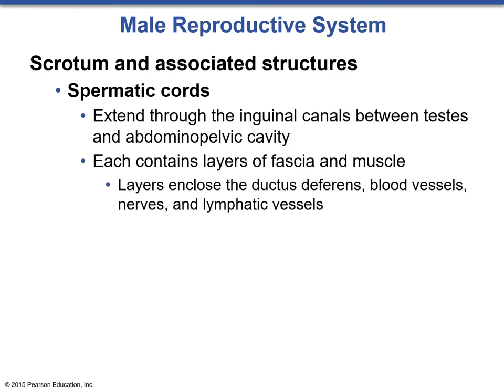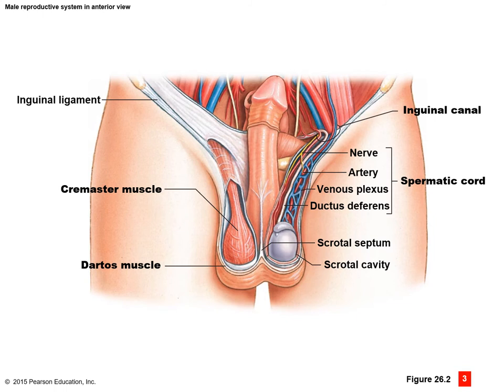Remember the spermatic cords — those are the actual structures that extend through the inguinal canal. They are a combination of the ductus deferens, blood vessels, nerves, and lymphatic tissue all bound together in one structure that extends up and around. They are actually covered by two muscles. Here we can see a diagram of the testis with the epididymis and the spermatic cord, which is a combination of the nerve, artery, venous plexus, and the ductus deferens. This leads up, back, and around via the ductus deferens and then inserts into the prostate.